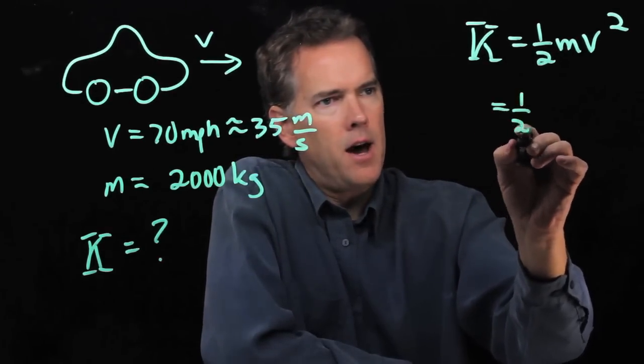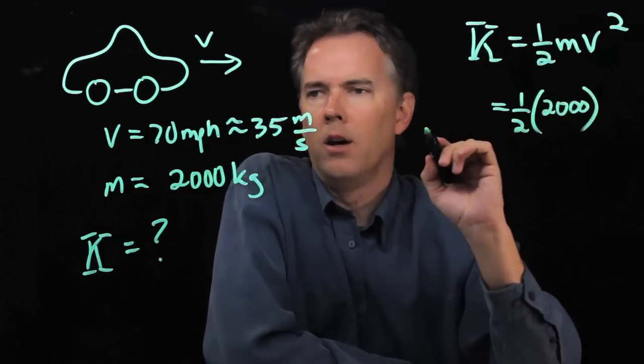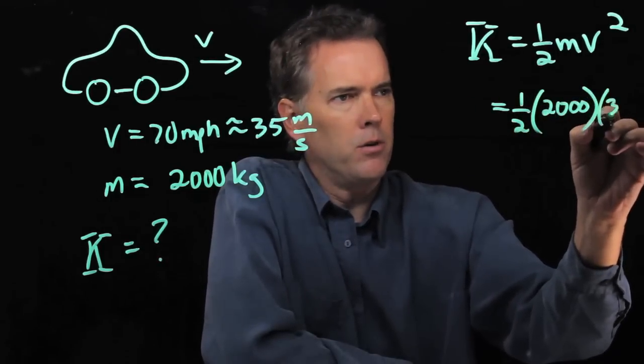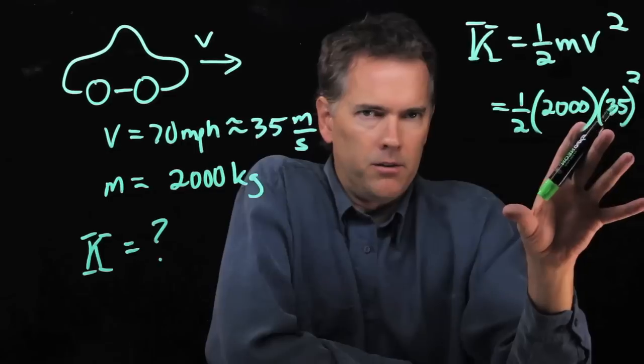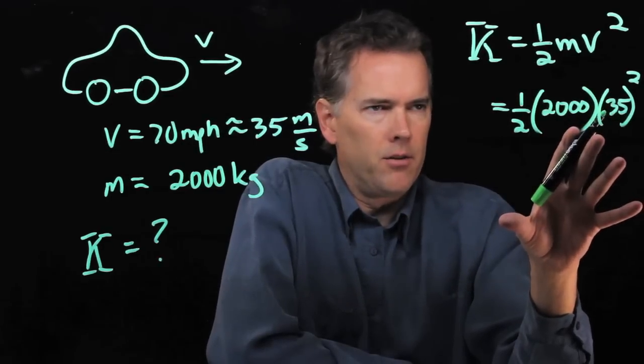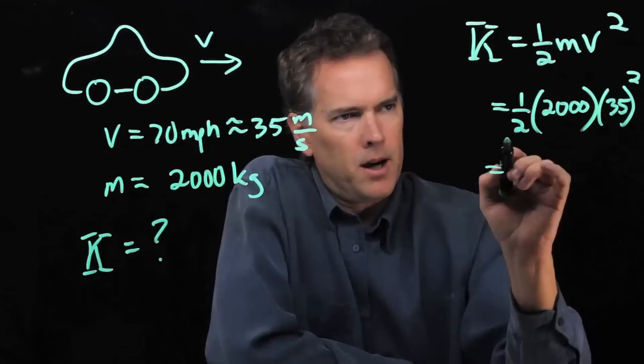We've got m which we said was 2,000. We've got V which we just said was 35 meters per second. All of this is SI unit so we don't have to keep writing our units down over and over again. And what do we get if we multiply this out?